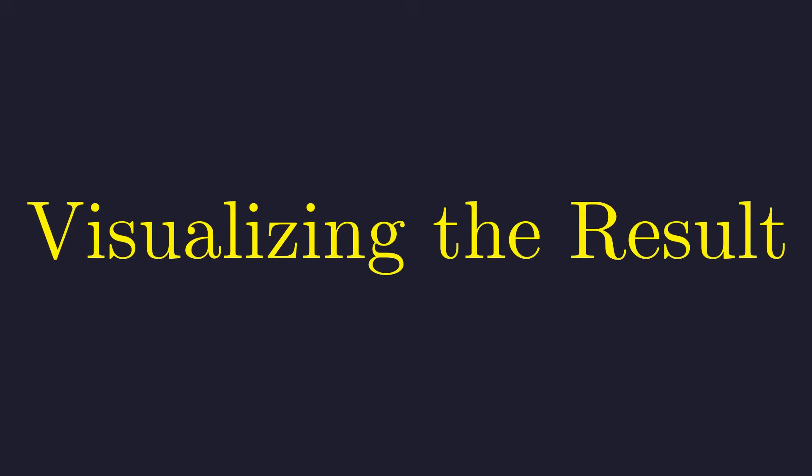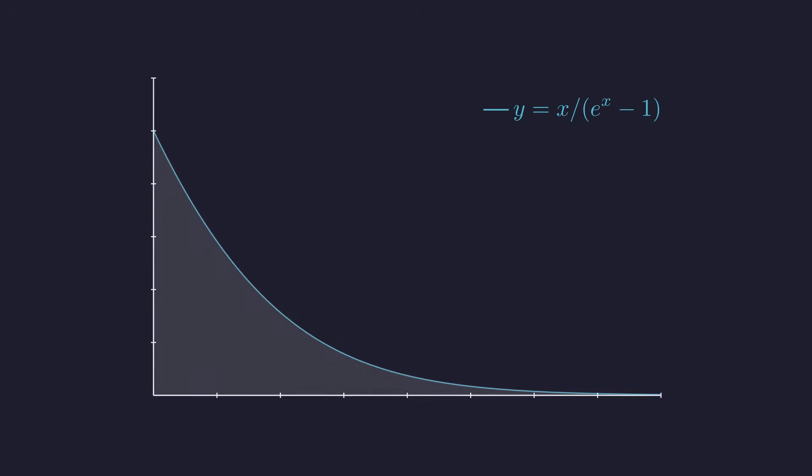Let's take a moment to visualize what we just computed. Here's what the function looks like. Starting at x equals 0, it starts close to 1 and then drops off exponentially fast. The integral from 0 to infinity is the total area under this curve. What we've proven is that this area, which seems like it should be some messy number, is actually exactly pi squared over 6. Beautiful.